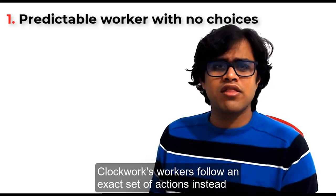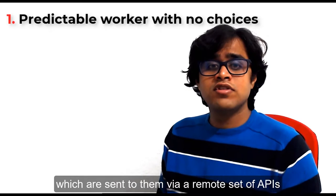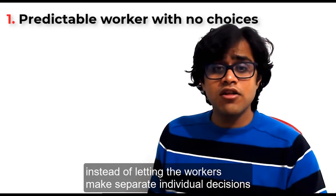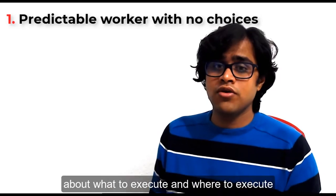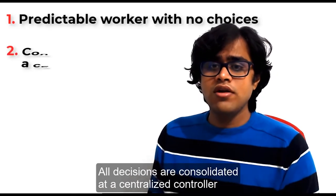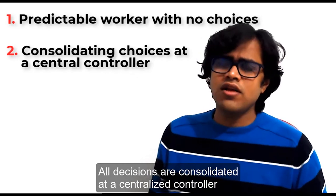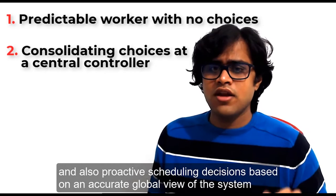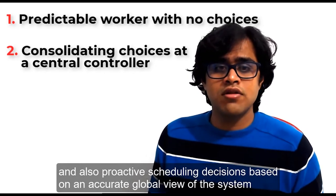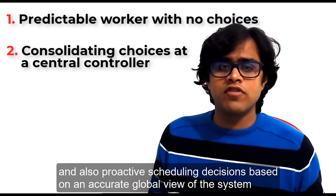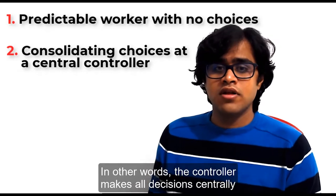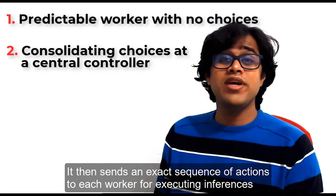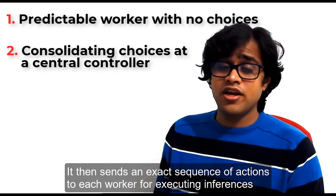Clockwork's workers follow an exact set of actions instead, which are sent to them via a remote set of APIs. Instead of letting the workers make separate individual decisions about what to execute and where to execute, all decisions are consolidated at a centralized controller. The controller can this way make smart load balancing decisions and also proactive scheduling decisions based on an accurate global view of the system. In other words, the controller makes all decisions centrally. It then sends an exact sequence of actions to each worker for executing inferences.